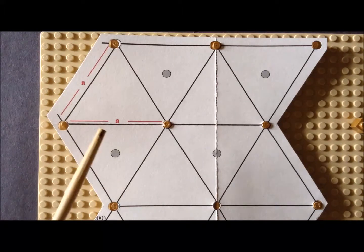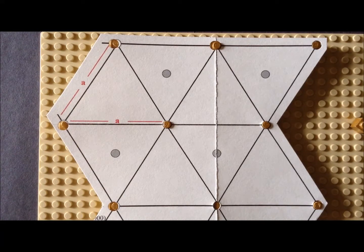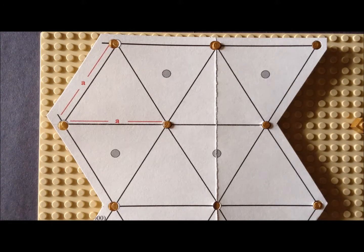then the atoms that would be at these gray positions would be the B layer. So we have this alternation of A, B, A, B as we go through a distance c, that parameter c, from the hexagonal and the hexagonal close-packed systems.